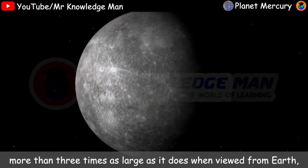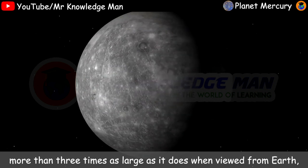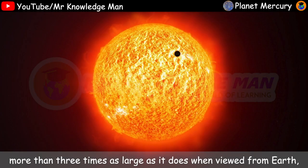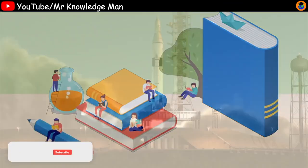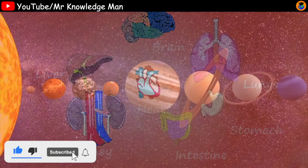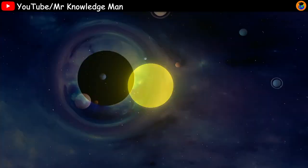From the surface of Mercury, the sun would appear more than 3 times as large as it does when viewed from Earth. And the sunlight would be as much as 7 times brighter. Thank you everybody for watching my videos. Bye bye! See you in the next video!